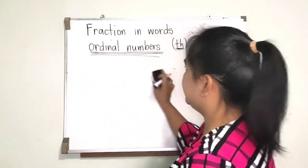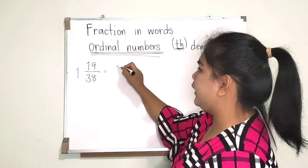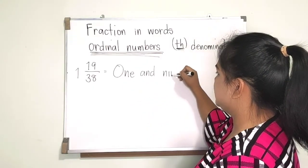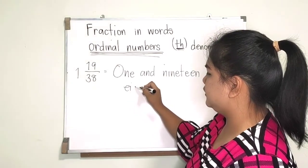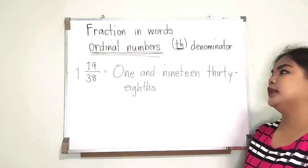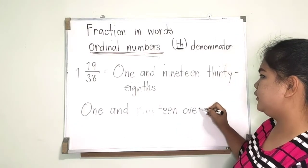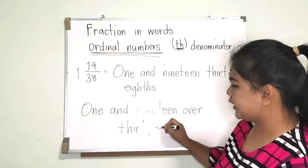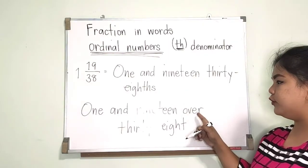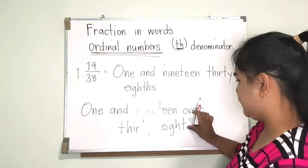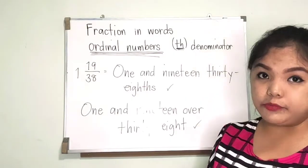What if we have numbers more than 20? For example, one and 19/38. In the correct way, we write 'one and nineteen thirty-eighths.' But I will allow my students to write 'one and nineteen over thirty-eight.' Just remember, you cannot write 'over' and at the same time use an ordinal ending like THS — that is wrong.